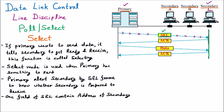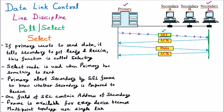This frame is available to every device because multipoint topology uses a single link. The primary is connected to all secondaries with a single wire, so when the select frame is sent, it is visible to A, B, and C — it goes to all. But since the select frame contains an address, all devices match their address. A does not match and discards it. B does not match and discards it. C matches the address and takes the frame.